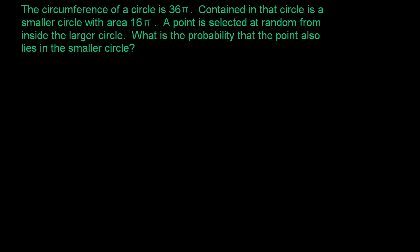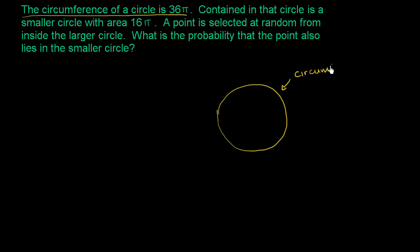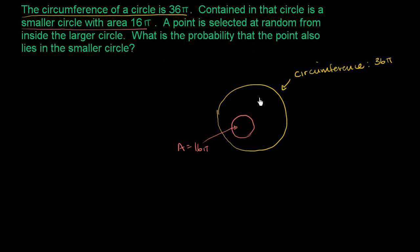The circumference of a circle is 36 pi. Let's draw this circle — so the circle looks something like that. The circumference is 36 pi. Then they tell us that contained in that circle is a smaller circle with area 16 pi. So inside the bigger circle, we have a smaller circle that has an area of 16 pi. A point is selected at random from inside the larger circle — we're going to randomly select some point in this larger circle.